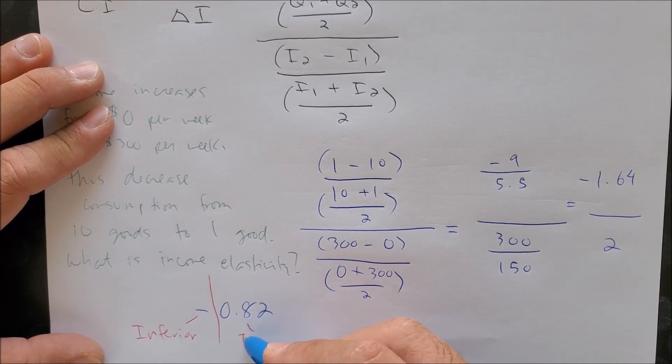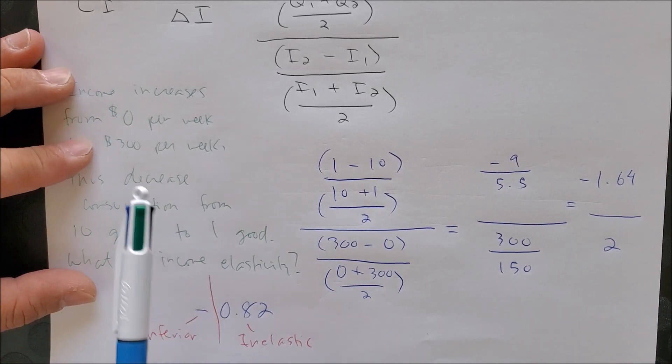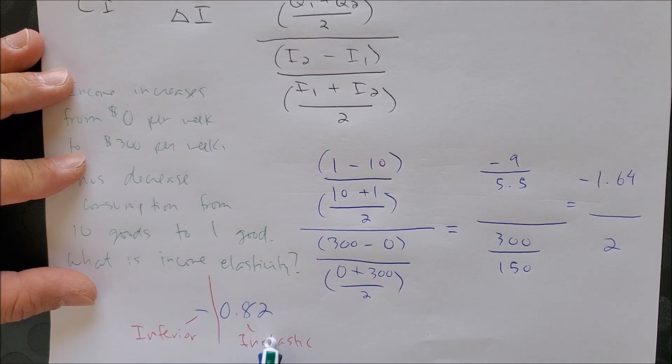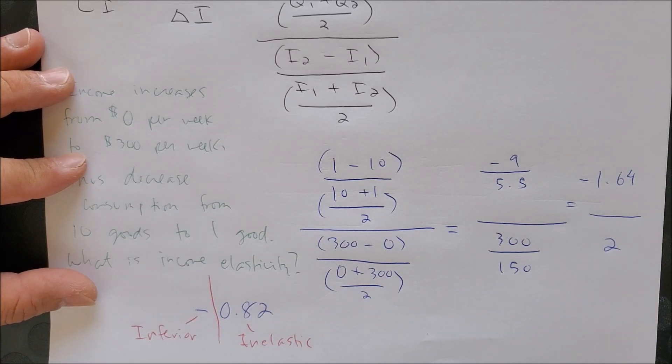So again, like the previous example, when you see a 300% increase in your income, your response to no longer consume this good is inelastic - it's slow. So again, this good holds a true value to your heart, which is why you will continue to consume the good no matter how much more money or income you are receiving.